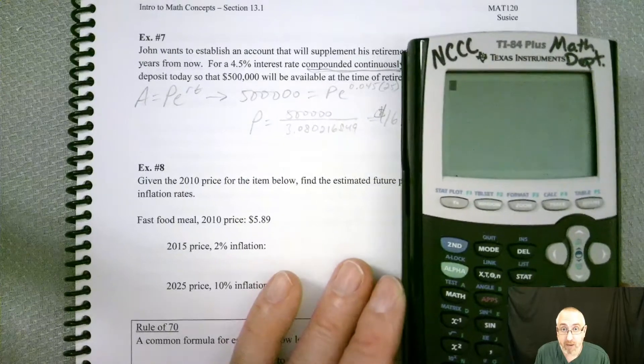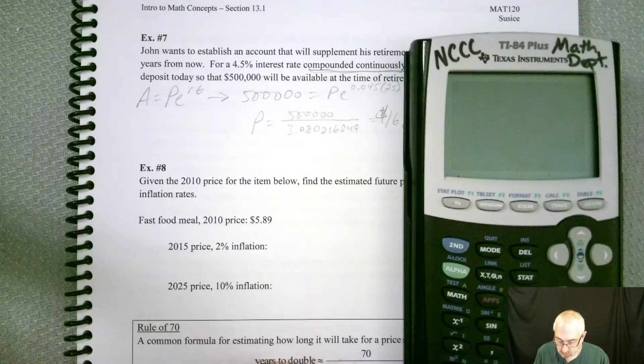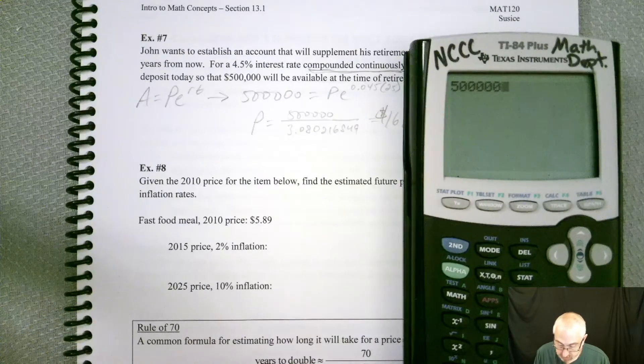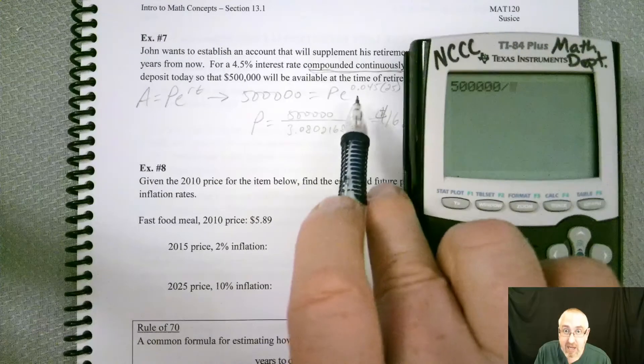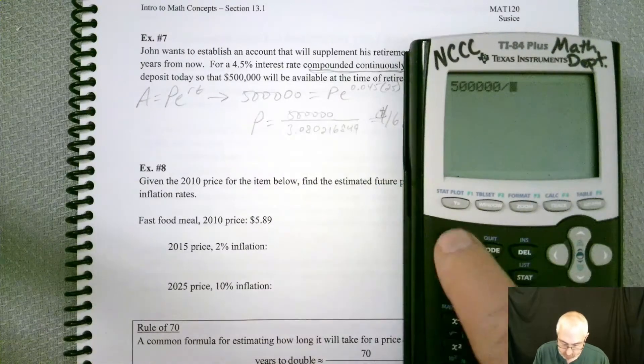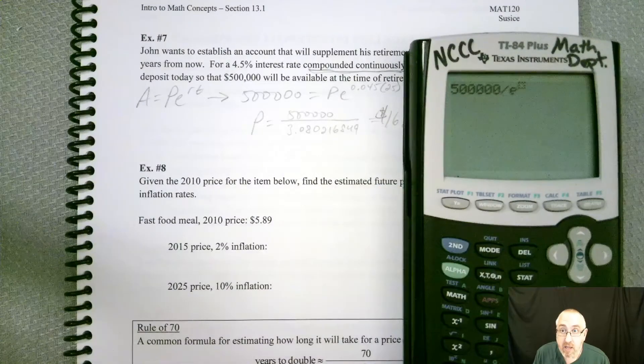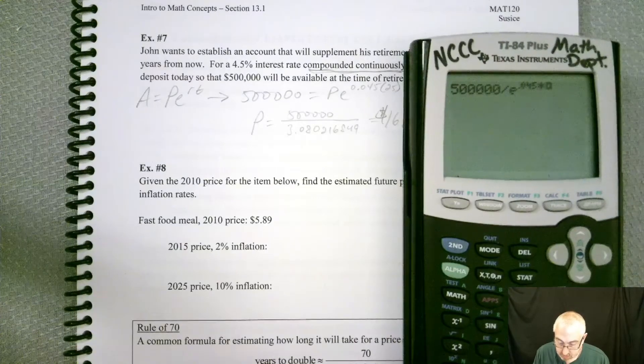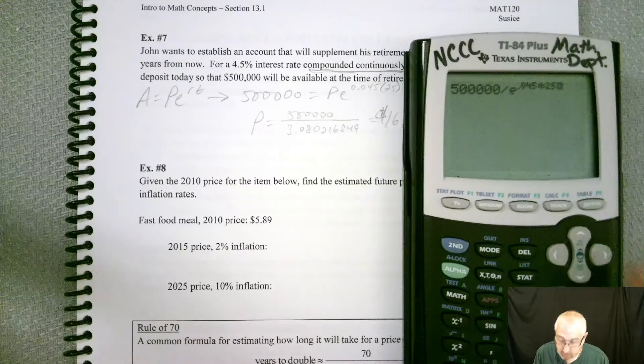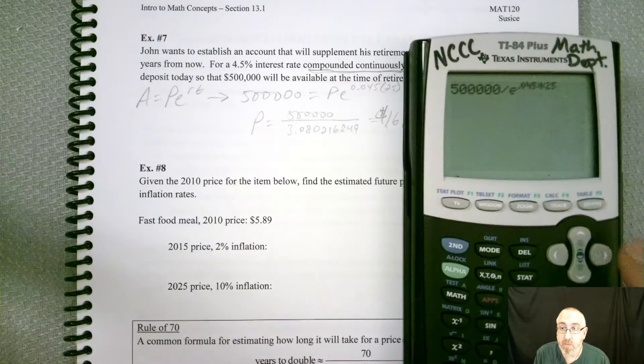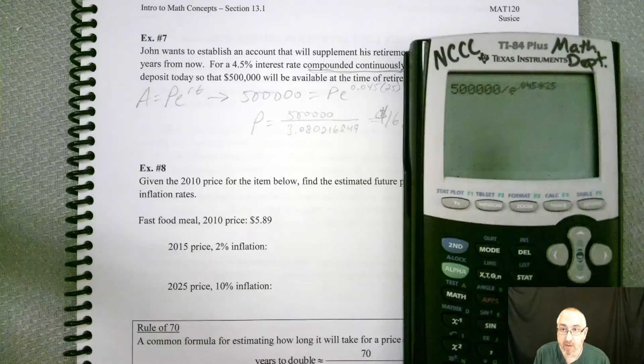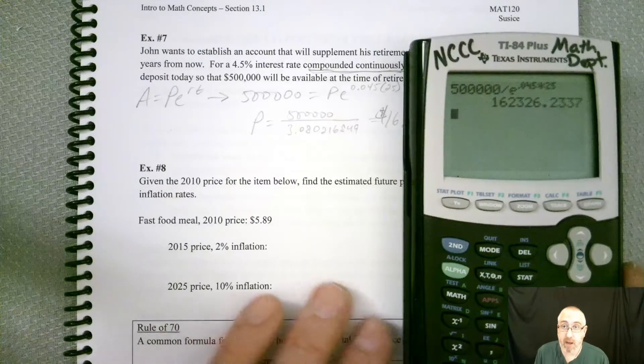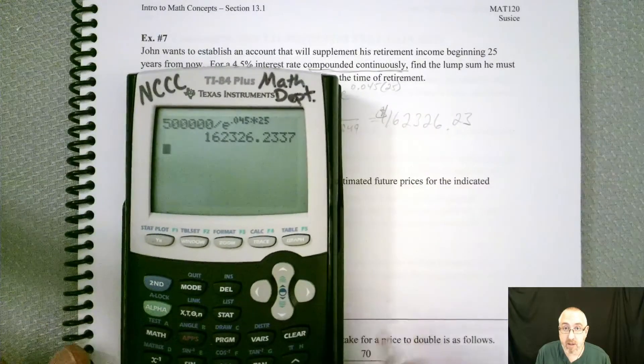So if we wanted to say 500,000, make sure to put enough zeros, divided by, I'm going to put this E expression in there. So I'm going to go second E, and I'll put my exponent, 0.045 times 25. And I like to use the side arrow to put me back down at the bottom there. And if I hit enter, look at what I got. I got the same answer.